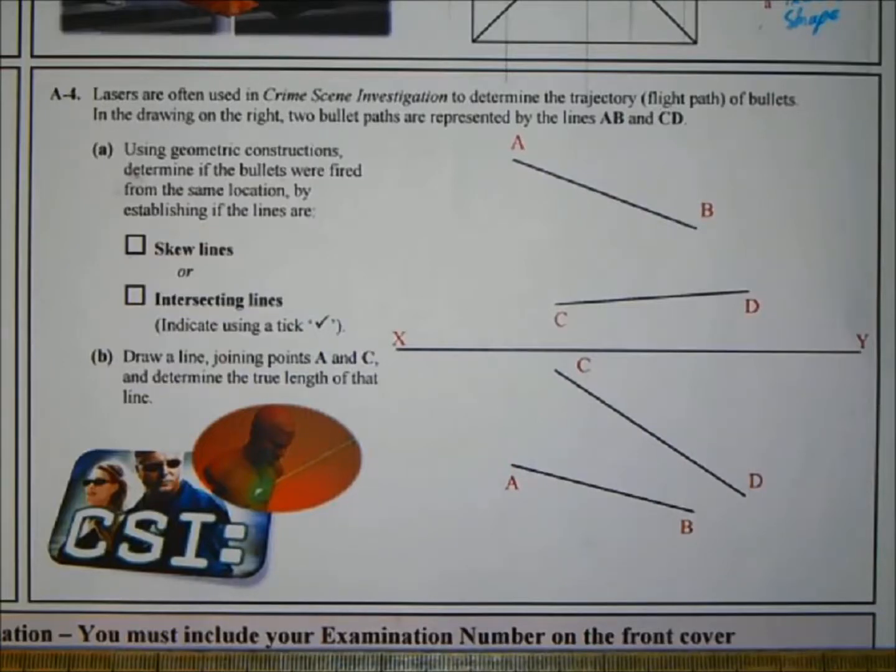Part A: using geometric constructions, determine if the bullets are fired from the same location by establishing if the lines are skew lines or intersecting lines. Just tick the box. Part B: draw a line joining points A and C and determine the true length of that line.